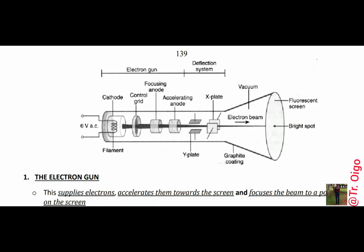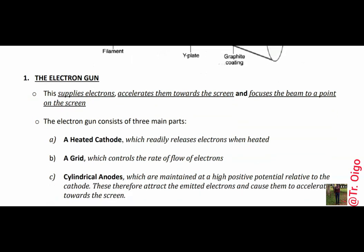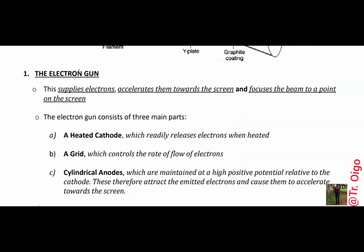We can look at the function of each particular part. The function of the electron gun is to supply electrons, accelerate them towards the screen, and focus the beam to a point on the screen. The electron gun consists of the heated cathode, which readily releases electrons when heated. It also consists of a grid, and the function of the grid is to control the rate of flow of electrons — in other words, the grid controls the brightness of the screen.